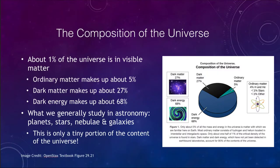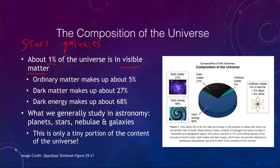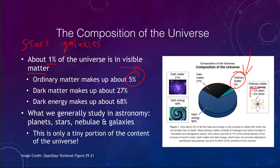What is the composition of the universe? Most of what we study in astronomy is ordinary matter, and about 1% of the universe is visible matter — things we can see, like stars, galaxies, and nebulae. Ordinary matter itself is about 5% of the universe, most of it in hydrogen and helium gas, with less than 1% in stars or other items. So ordinary matter is just a small part of the mass and energy of the universe.